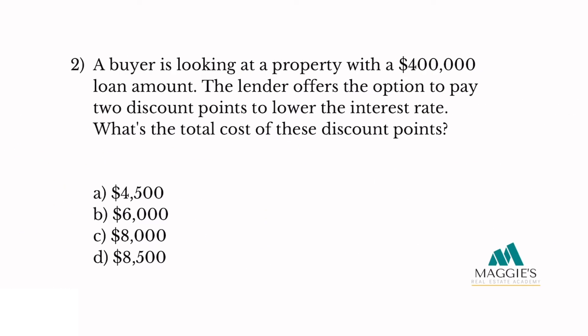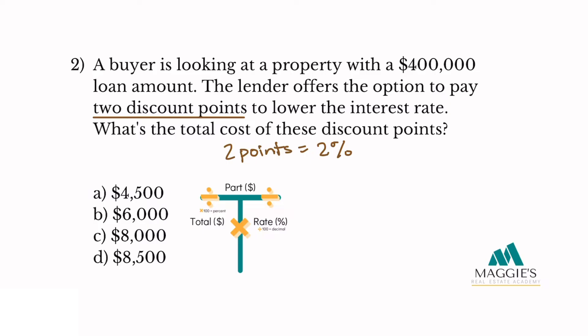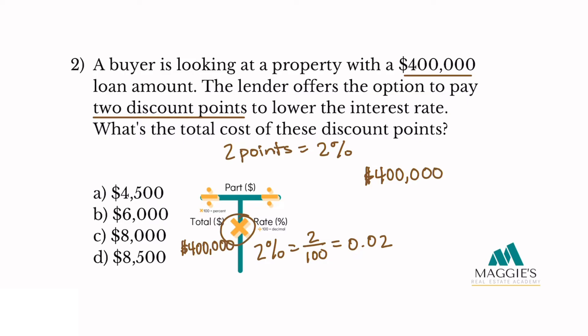Question two. A buyer is looking at a property with a $400,000 loan amount. The lender offers the option to pay two discount points to lower the interest rate. What is the total cost of these discount points? Two points equals 2%. Put 2% in the rate column and convert to a decimal: 0.02. The $400,000 loan amount goes in the total column. Multiply: $400,000 times 0.02 equals $8,000. The answer is C.